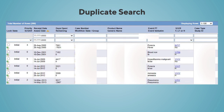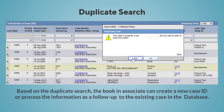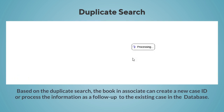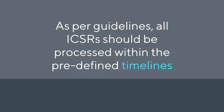The associate then conducts a duplicate search in the database to verify if the report is initial or a follow-up. Based on the duplicate search, the book-in associate can create a new case ID or process the information as a follow-up to the existing case in the database.